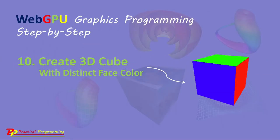In this video series, you will learn everything you need to get started with WebGPU graphics programming. In the last few videos, I explained how to create some simple graphics and primitives. In fact, all of these graphics objects are flat and two-dimensional. We have not created any real 3D graphics yet. In this video, I will explain how to create a 3D cube with distinct face color. This is the first real 3D object we are going to create in a WebGPU application.